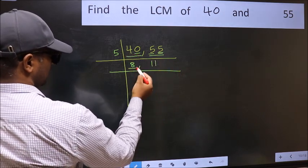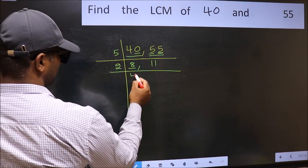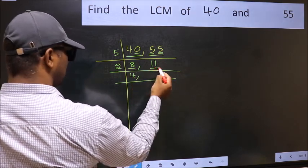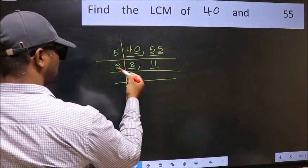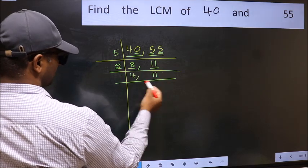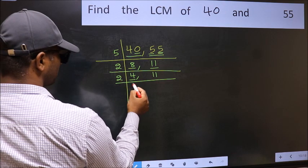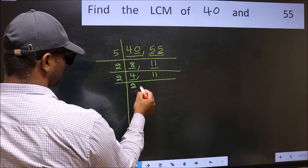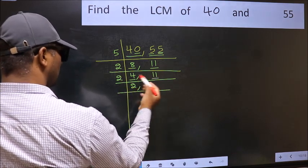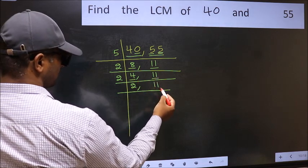Now we have 8. 2 times 4 is 8, so divide by 2. The other number is 11 — not divisible by 2, so write it down as it is. Now we have 4. 2 times 2 is 4. The other number 11 is still not divisible by 2, so write it down as it is.